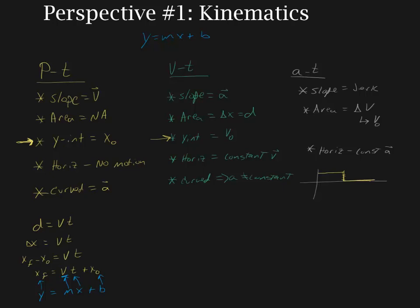For velocity, we start with a equals delta v over t. Rearranging gives v-final minus v-initial equals at, so v-final equals at plus v-initial. Writing y equals mx plus b: the y-axis is velocity, the x-axis is time, the y-intercept is the initial velocity, and the slope of the velocity-time graph equals acceleration. That gives you a taste of what we're going to look at in this example.